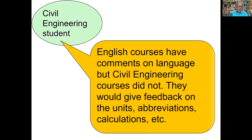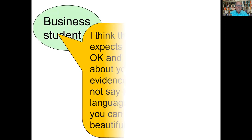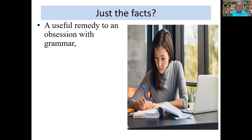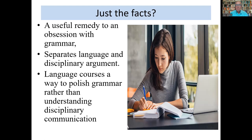Many students, however, found that their subject tutors focus on what they've written about rather than the way they've written it. By ignoring language errors, they perhaps signal more tolerance of error. A civil engineering student said: English courses have comments on language, but civil engineering courses did not — they give feedback on units, abbreviations, calculations. A business student said: the professor usually expects your language is OK, and they're just concerned about your data or evidence. As a result, many students see it's OK to make mistakes so long as they state the facts. This separates language and disciplinary argument, and language courses come to be seen as just polishing up grammar rather than understanding the communicative worlds of academic disciplines.